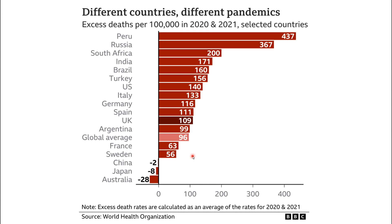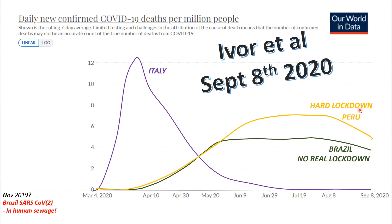Here's the next table — it shows deaths per 100,000 in selected countries. I usually use deaths per million but no worries. What immediately jumps out at me as a numbers guy is Peru and Brazil as a pair. I'll show you why — back in September 2020 I was specifically highlighting Peru and Brazil in my talks.